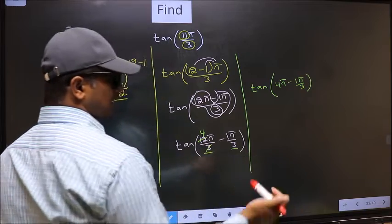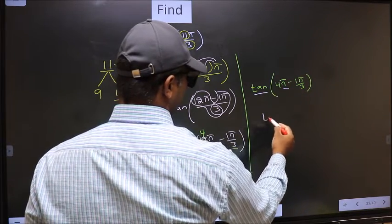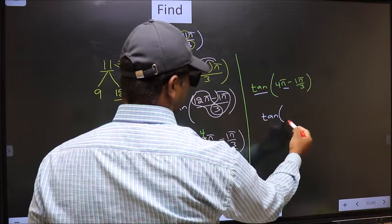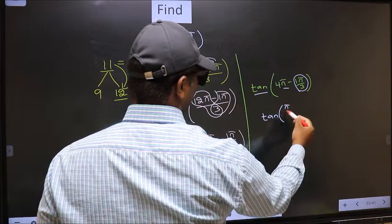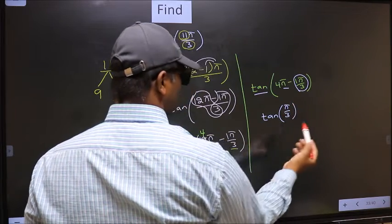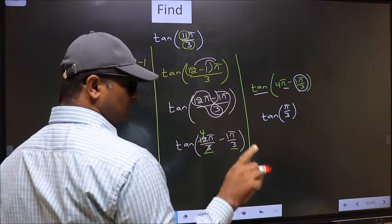Next, here we have π. So tan is not going to change, it will remain tan. And inside we get this angle π by 3. Now the question is, will we get here plus or minus?